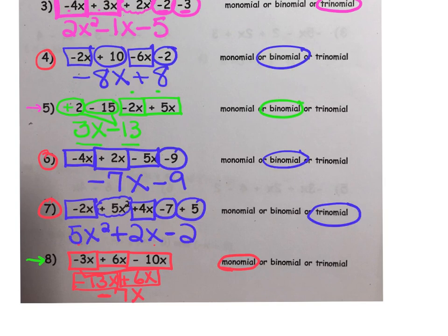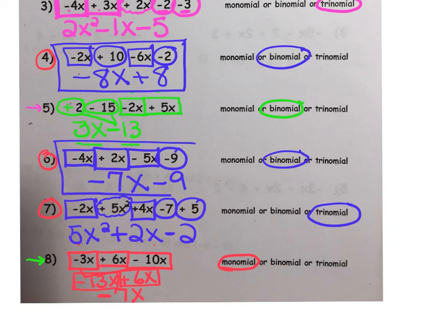Let's check your work. For number 4, you should have gotten negative 8x plus 8, clearly a binomial. For number 6, you should have gotten negative 7x minus 9, again a binomial. And for number 7, you should have gotten 5x squared plus 2x minus 2. Clearly, that's a trinomial.